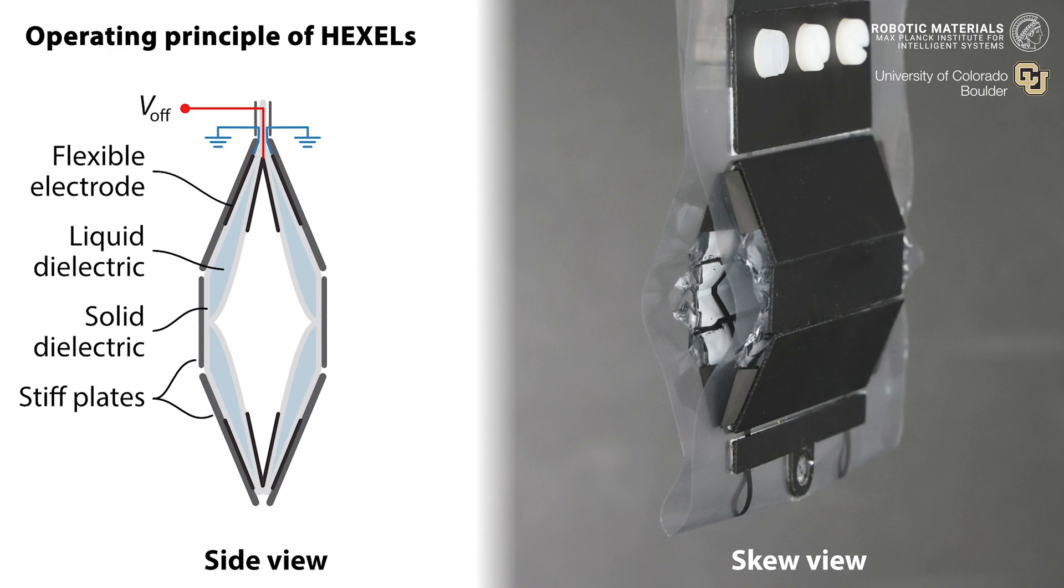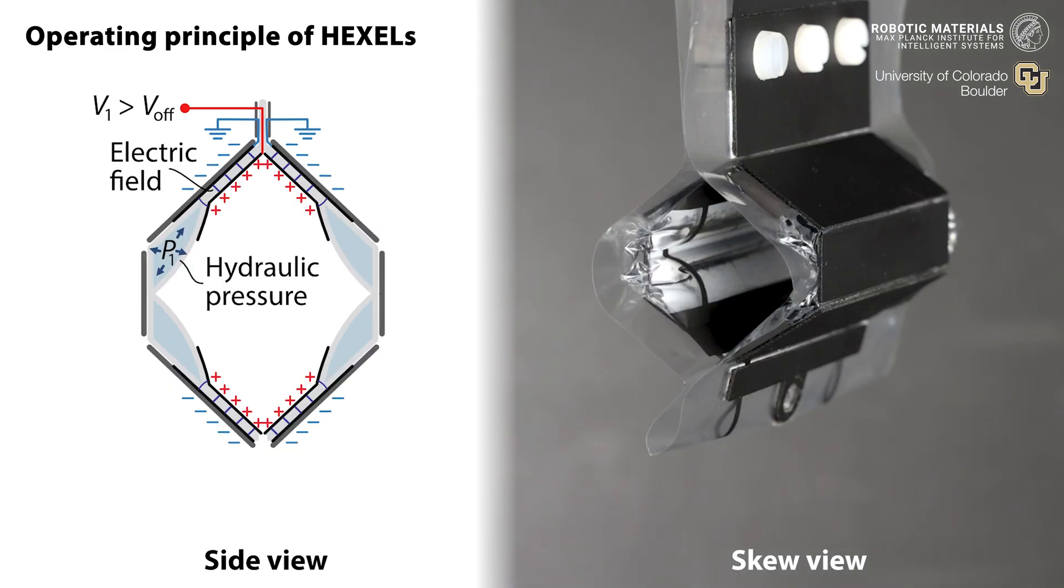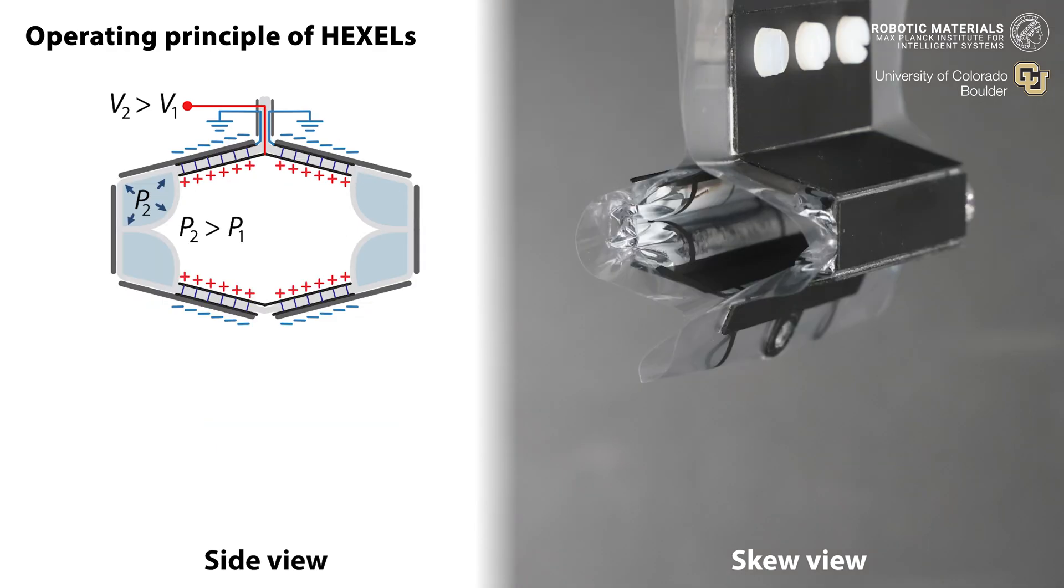Soft actuators sit inside an exoskeleton of plates. Applying a high voltage to the actuators causes the HEXEL to transform from a tall narrow prism to one that's wide and flat.